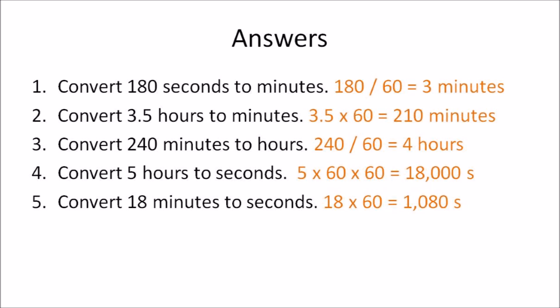The answers: number one — seconds to minutes, so 180 seconds divided by 60 gives you three minutes. Number two — hours to minutes, so 3.5 multiplied by 60 gives you 210 minutes. Number three — minutes to hours, so 240 minutes divided by 60 gives you 4 hours. Number four — 5 multiplied by 60 multiplied by 60 gives you 18,000 seconds. Number five — minutes to seconds, so 18 minutes multiplied by 60 gives you 1,080 seconds.